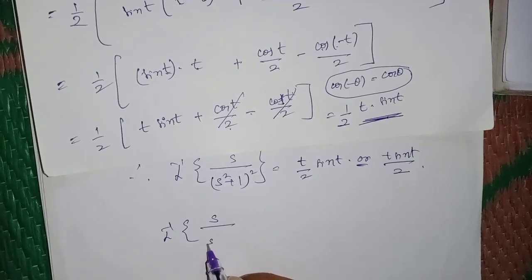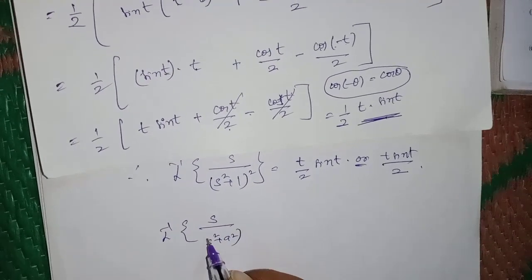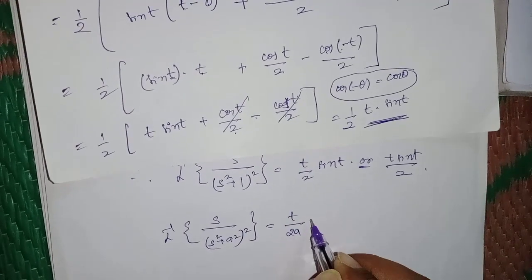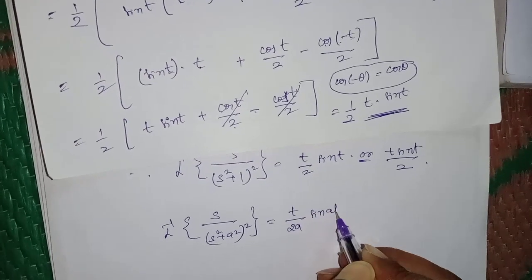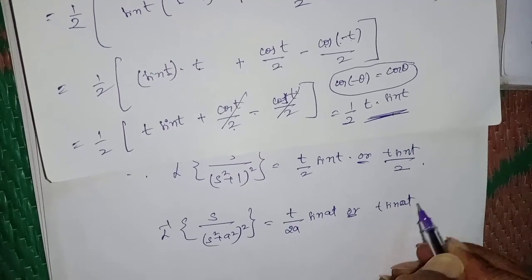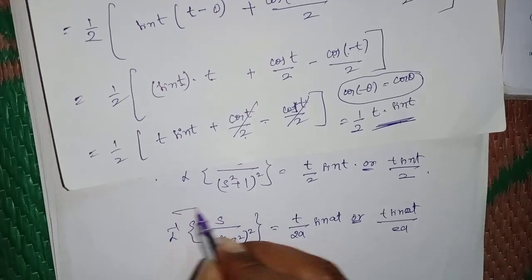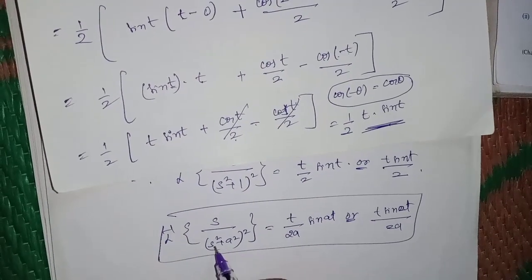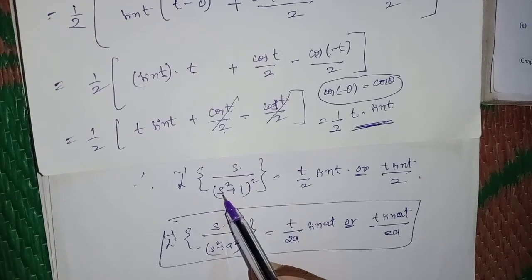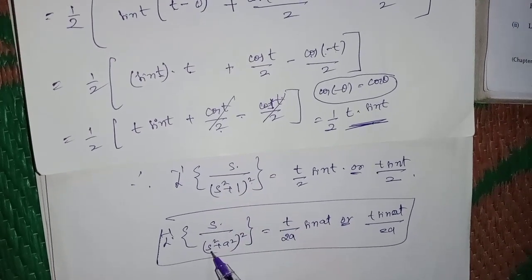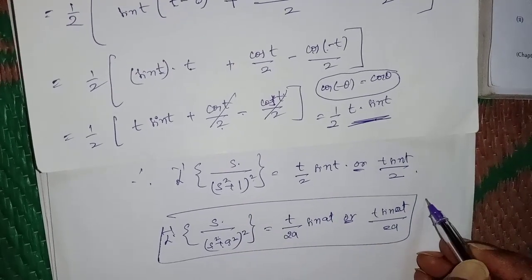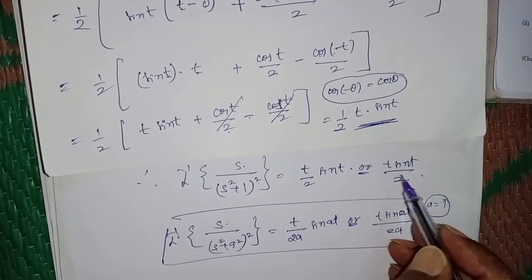In general, L⁻¹ of s/(s²+a²)² = t·sin(at)/(2a). Here the denominator has s²+1 whole squared, so a² = 1 and a = 1. Substituting a = 1 gives the final answer: t·sin(t)/2.